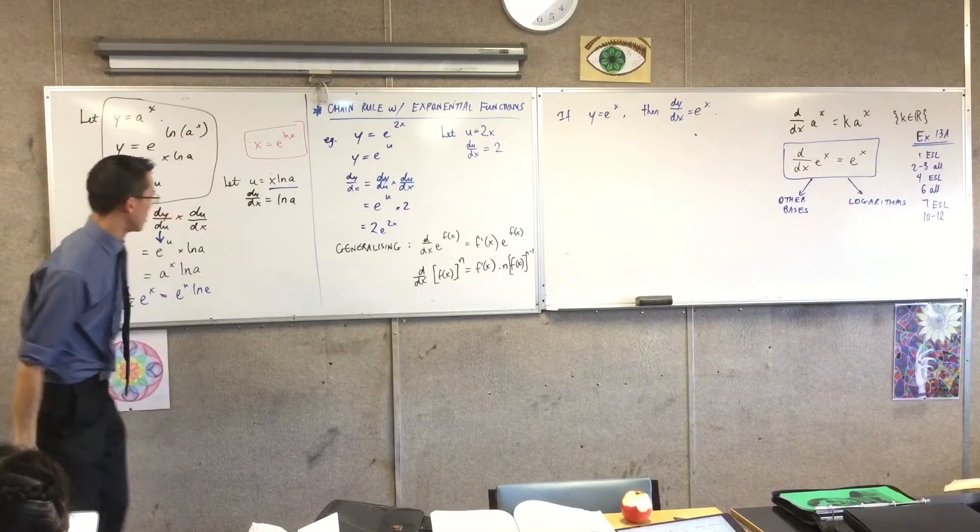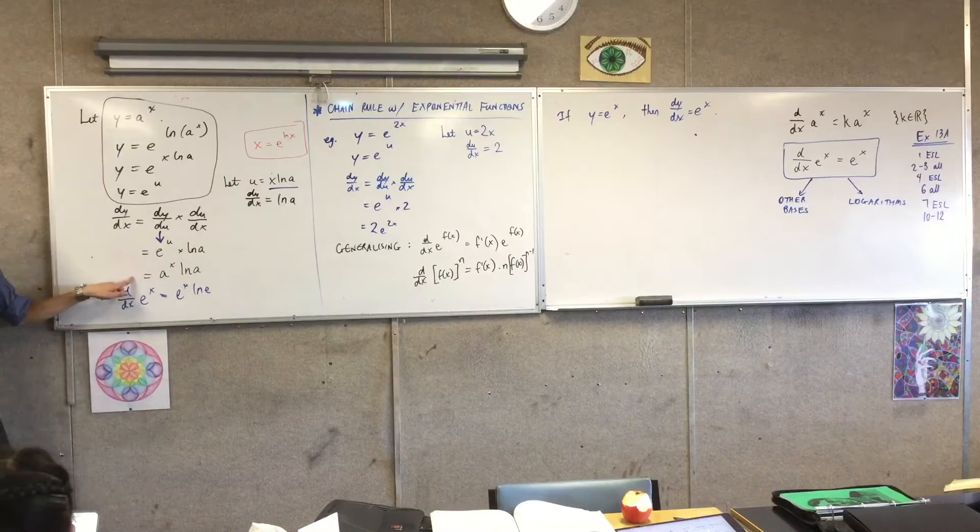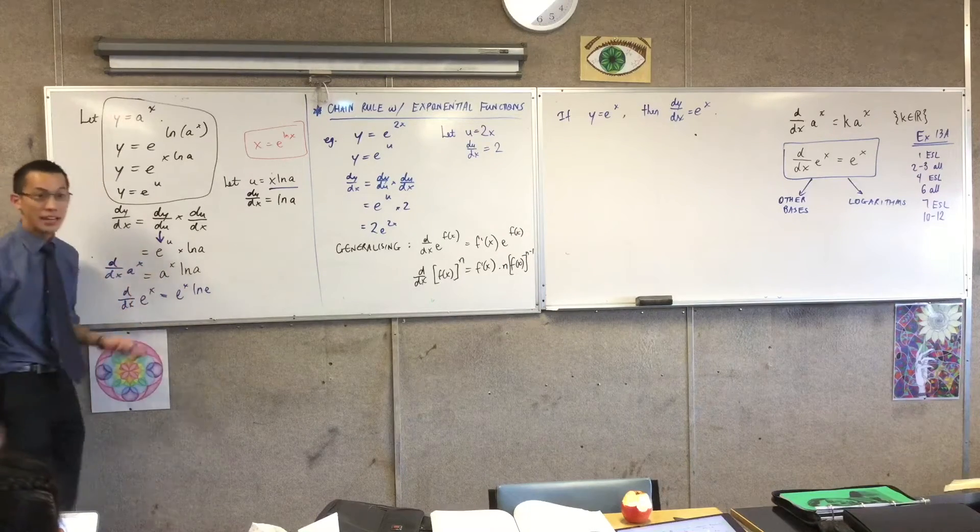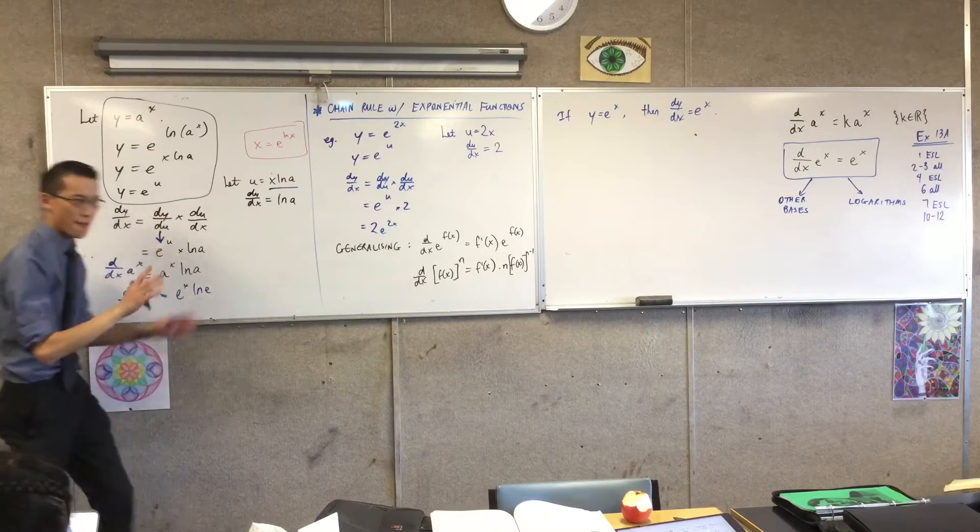So we did other bases. We got to this, right? The derivative of a to the x for any real number a is a to the x log a. Fantastic.